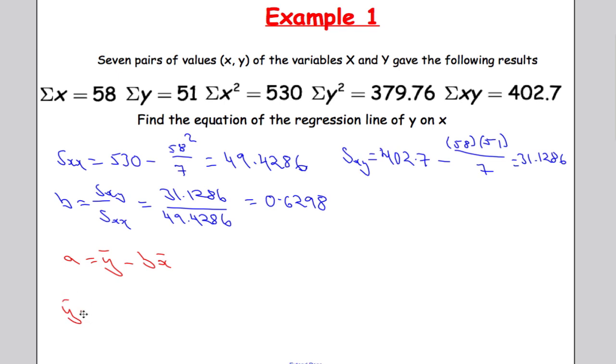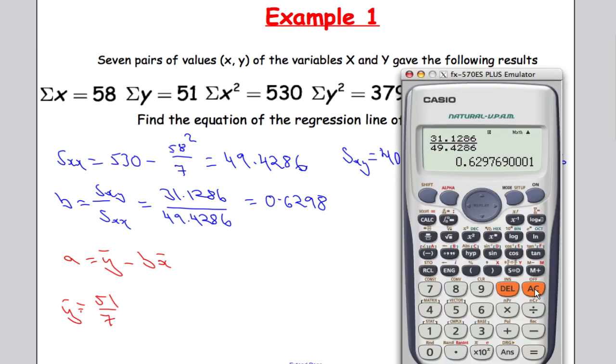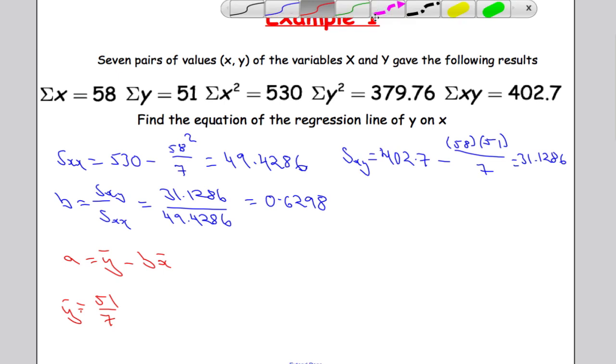Y bar equals the sum of the y's divided by the number of values. So it's going to be 51 divided by 7. Let's put that into our calculator. 51 divided by 7 gives 7.2857.